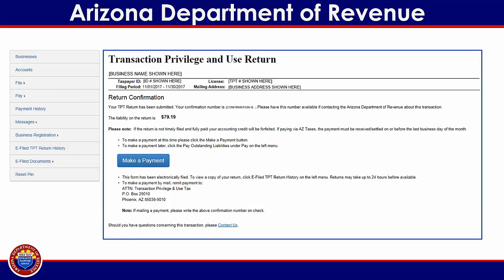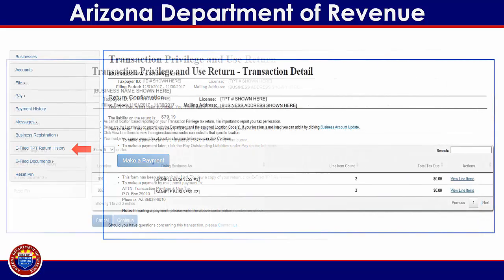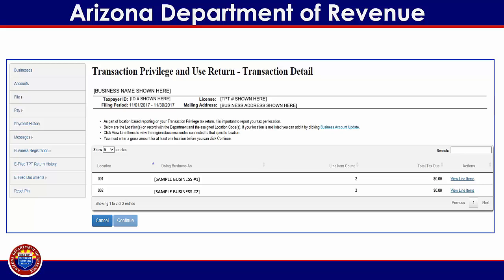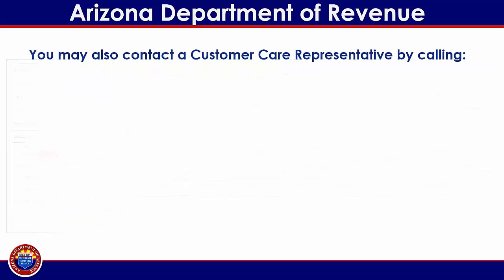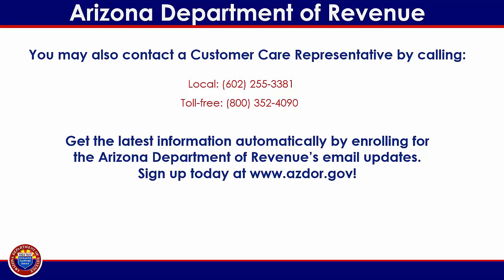You can review your electronic filed returns at any time by selecting the e-filed TPT return history option from the menu on the left side of the screen. If you require the assistance of an ADOR representative, you will be able to send an email directly from your aztaxes.gov user profile. From the menu displayed on the left side of the screen, select Messages, then select Compose Message from the submenu that will appear. You may also contact a customer care representative by calling the local and toll-free numbers provided, or by fax. Get the latest information automatically by enrolling for ADOR's email updates. Sign up today at www.azdor.gov.